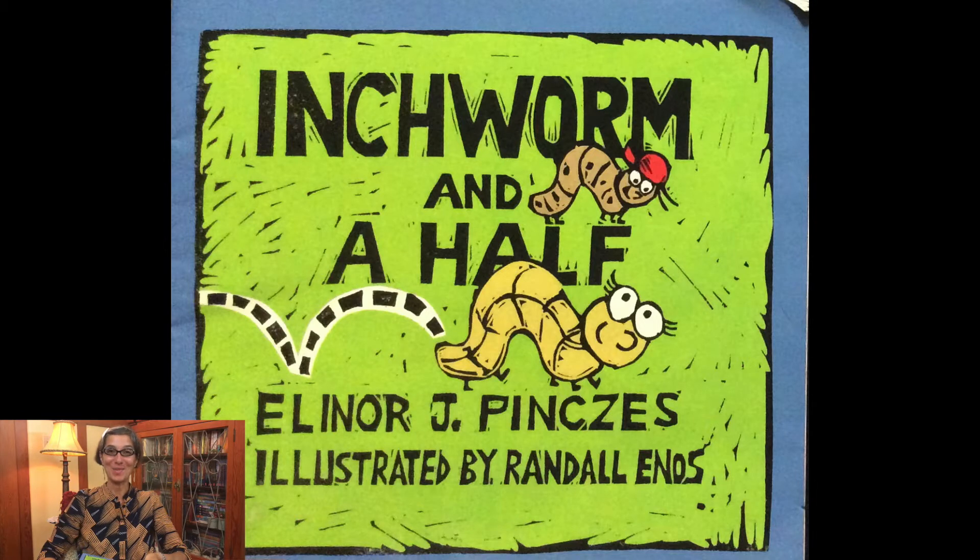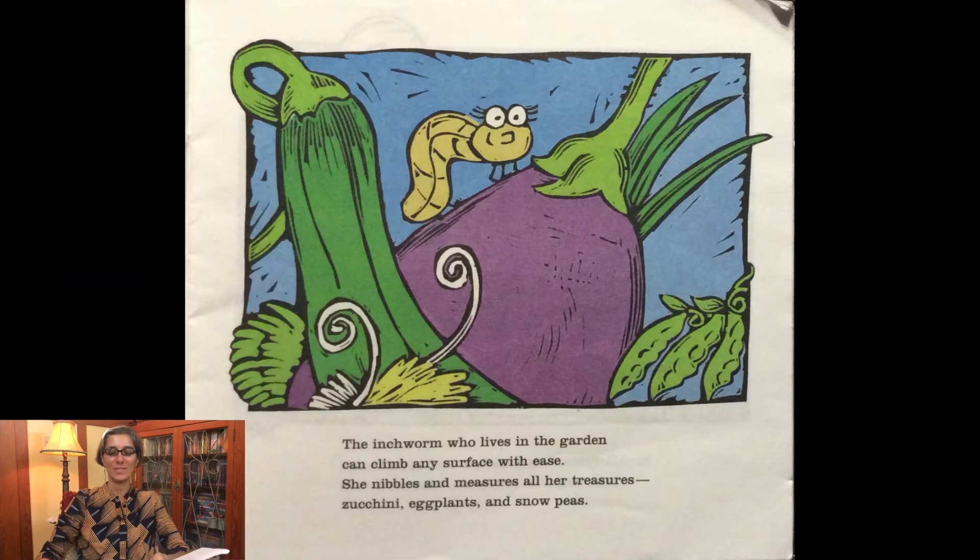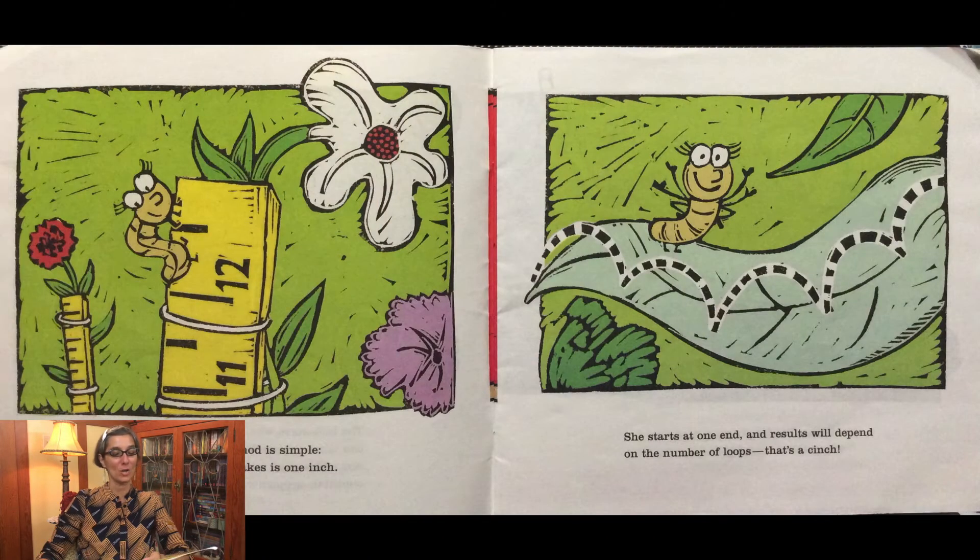Our story today has to do with measuring. The inchworm who lives in the garden can climb any surface with ease. She nibbles and measures all her treasures: zucchini, eggplants, and snow peas. Her measuring method is simple. Each loop that she takes is one inch. She starts at one end and results will depend on the number of loops. That's a cinch.